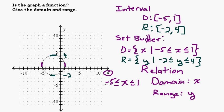So when you have a graph and you want to find the domain, just focus on how far left and right the graph goes. When you want to find the range, focus on how far up and down it goes — that's if it's connected and continuous. If it's not connected, it could be broken up into different pieces, but for simple examples that's what you want to look at.